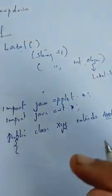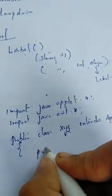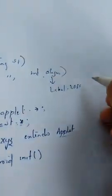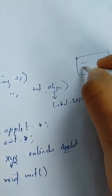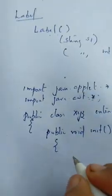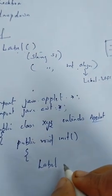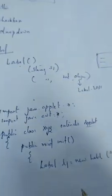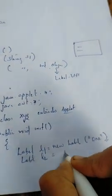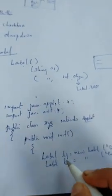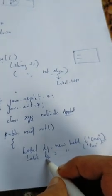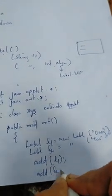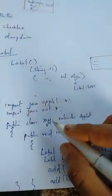In the init method, the applet will use add. We create a label — Label L1 equals new Label — with the candidate name element. Next, Label L2 is created the same way. Once both labels are created, we use applet add for the first label and add for the second label. This is our label program.